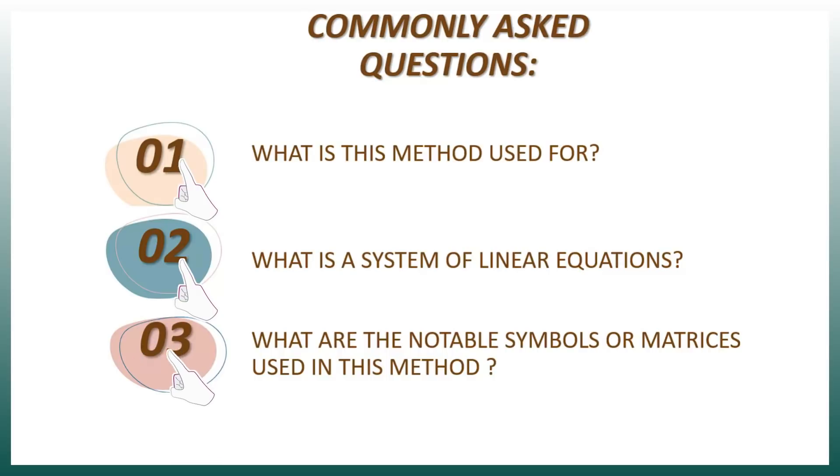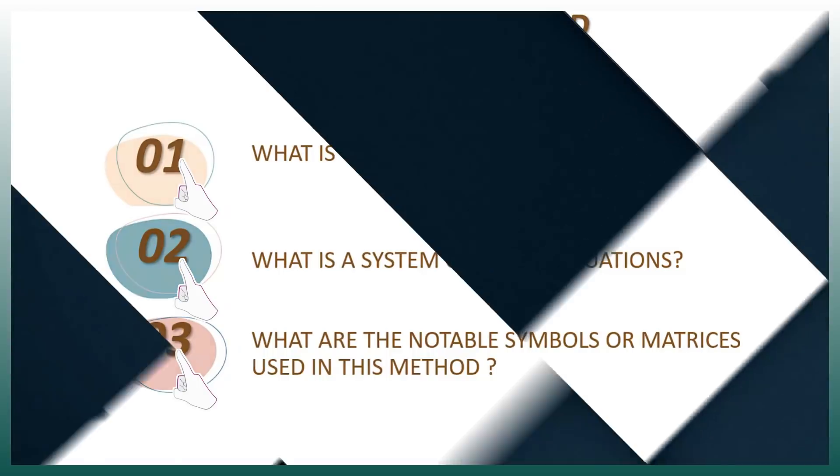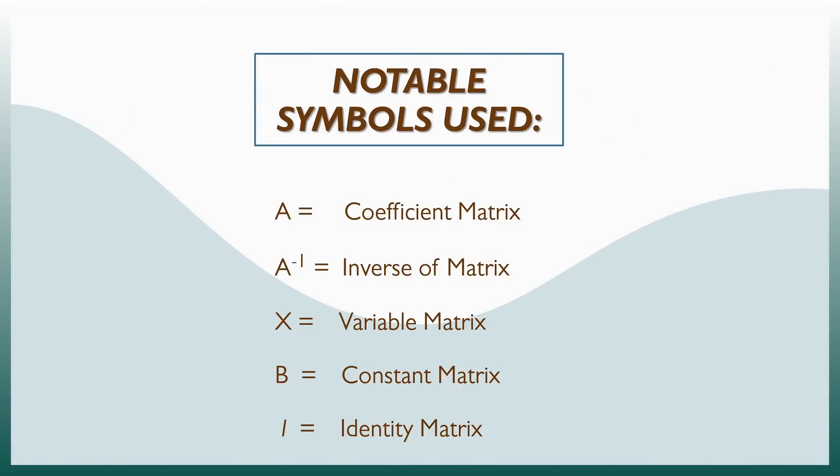Third, what are the notable symbols or matrices used in this method? The notable symbols used are as follows: A for the coefficient matrix, A raised to negative 1 for the inverse of matrix, X for the variable matrix, B for the constant matrix, and I for the identity matrix.